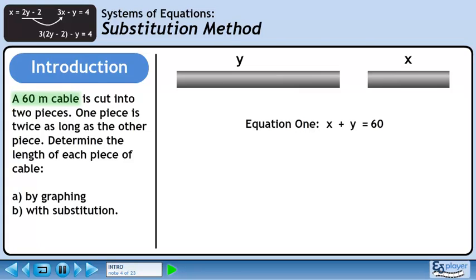We know the length of the original cable is 60 meters, so the lengths of the cut pieces must add up to 60 meters too. Our first equation is X plus Y equals 60.